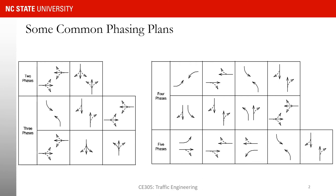On this slide we are seeing a number of common phase plans that can be used to control the sequence of phases at a signalized intersection — two phases, three phases, four phases, and five phases. The dashed lines are permitted movements, meaning those movements need to yield to other cars or pedestrians to continue. For example, a left turning movement shown as dashed needs to yield to through traffic. The solid lines are those that have the right of way; they just go through without needing to yield to anyone.